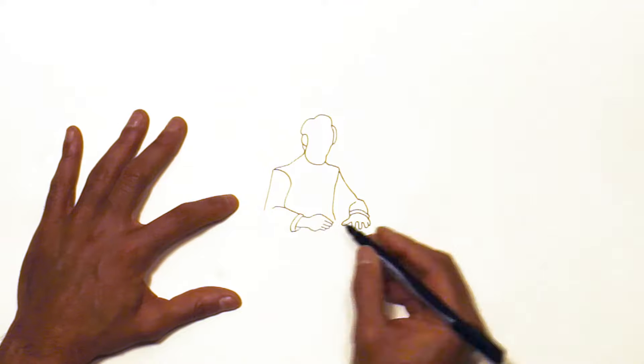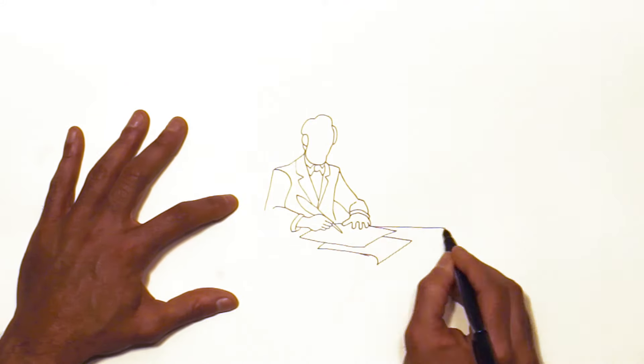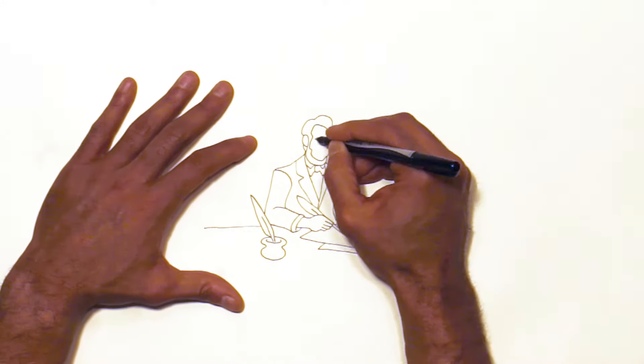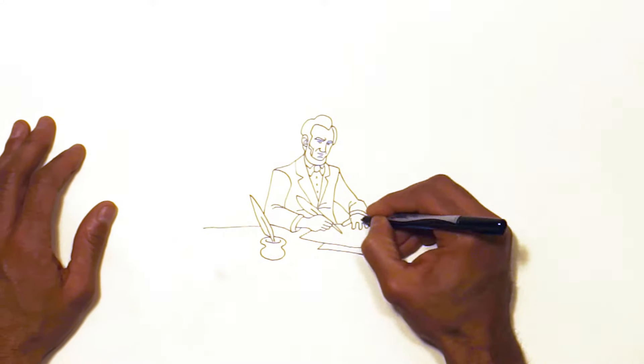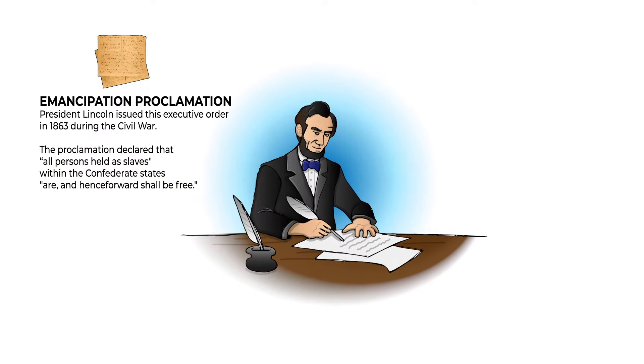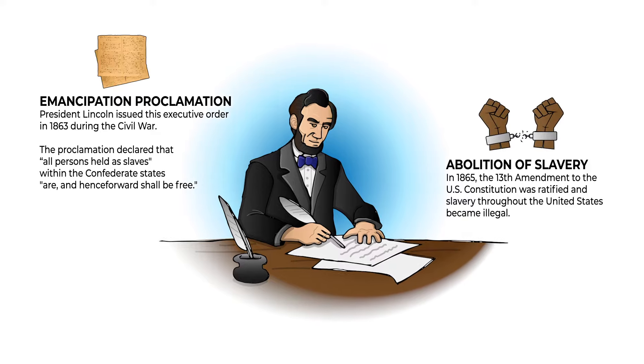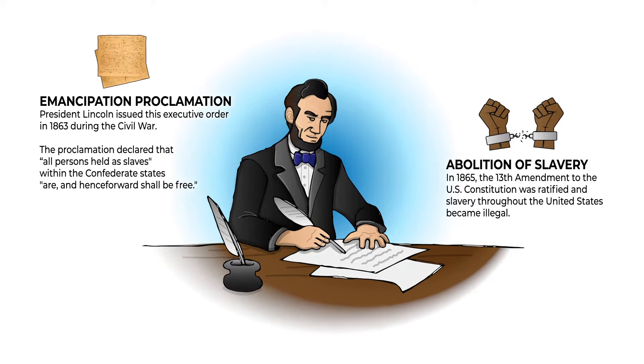In 1863, Lincoln issued the Emancipation Proclamation, declaring that all slaves in the Confederate Territory were to be set free. This was a pivotal step towards abolishing slavery and ensuring freedom for all.